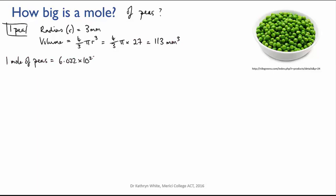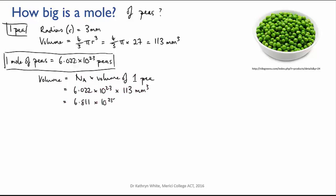If I have a mole of peas, that's 6.022 times 10 to the 23 peas, so the combined volume of those peas will be 6.022 times 10 to the 23 times 113 millimeters cubed for each pea, and that gives me 6.811 times 10 to the 25 cubic millimeters.